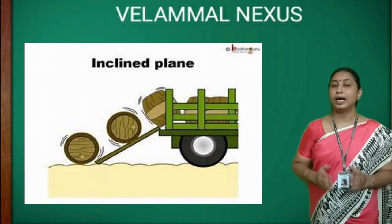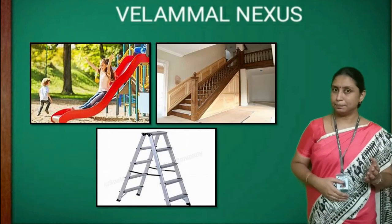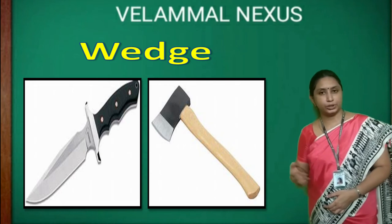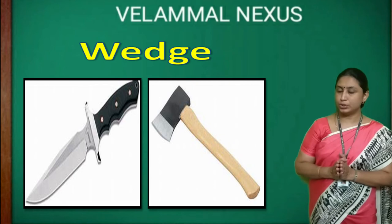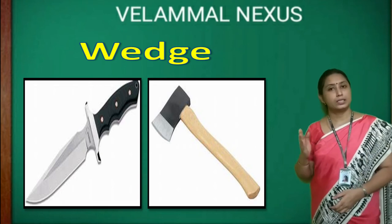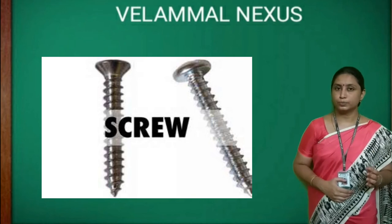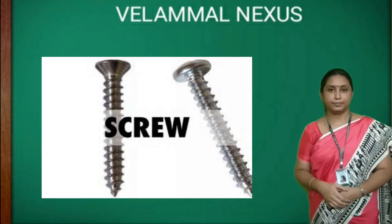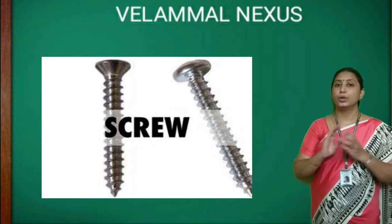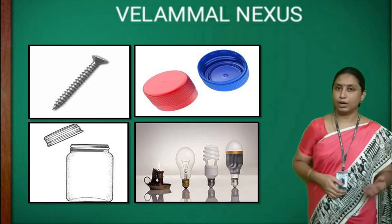An inclined plane is a slope that helps move heavy loads with less effort — examples: a hospital ramp and a playground slide. A wedge is formed when two inclined planes are joined together with one sharp end and one blunt end; it is used to cut or split things — examples: axe and knife. A screw is a type of modified inclined plane with a spirally grooved surface and a pointed end, used to hold things together — examples: metal screw, bottle cap, jar lid, and the base of some light bulbs.